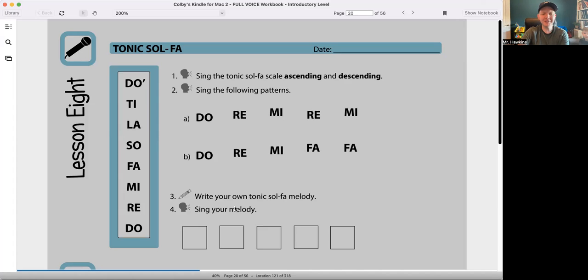Write your own melody in solfege. Let's try. Do, Ti, La, Sol, Mi. And sing it. Do, Ti, La, Sol, Mi.